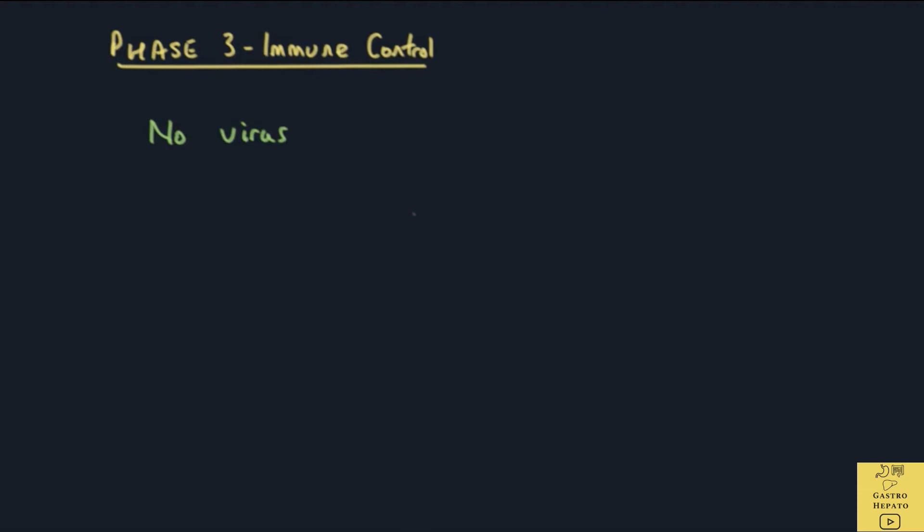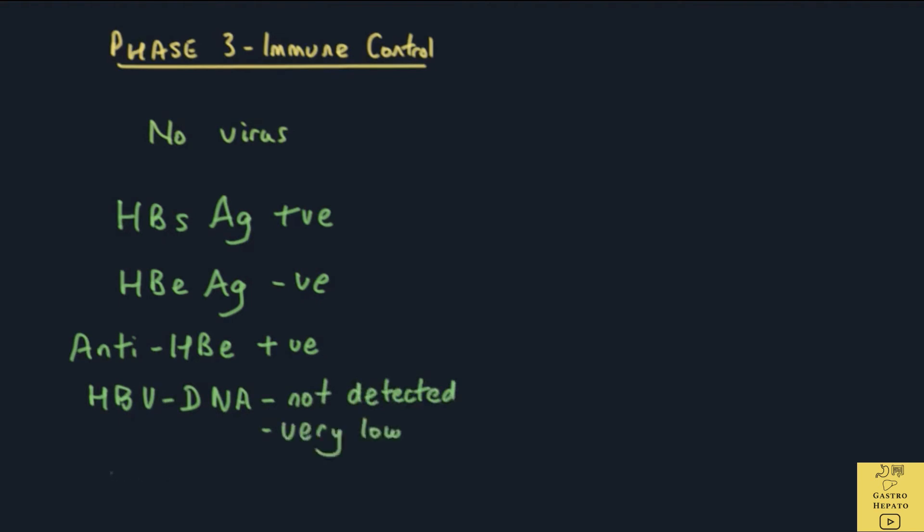The mutant viruses are usually not as aggressive as the original virus. In Phase 3, the blood tests would show that the HBs antigen is positive, the HBe antigen is negative, and the antibody to the HBe called the anti-HBe is positive. HBV DNA is either not detected or very low. The ALT level is normal, indicating that there is no liver damage.